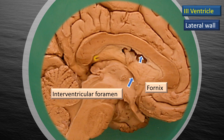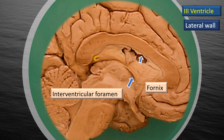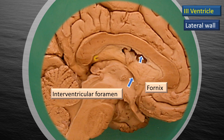The fornix has been highlighted by a black glowing curved line. The interventricular foramen — the entry into the third ventricle — is marked by the lower blue arrow, while the upper blue arrow suggests it communicates with the lateral ventricle. This important slide shows the fornix and how the interventricular foramen is located right below the fornix.